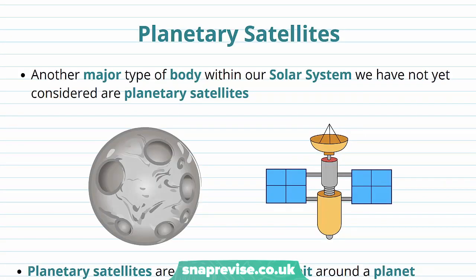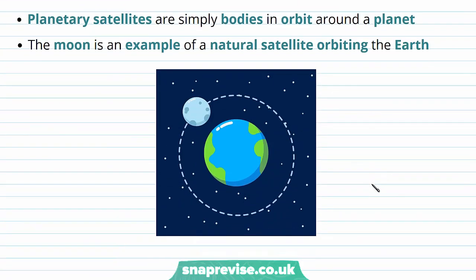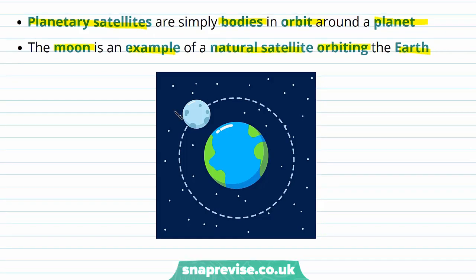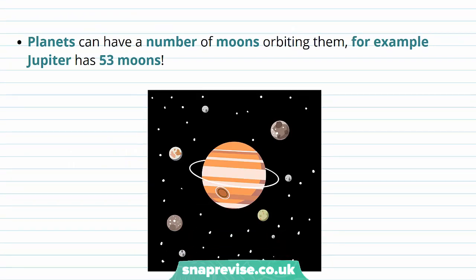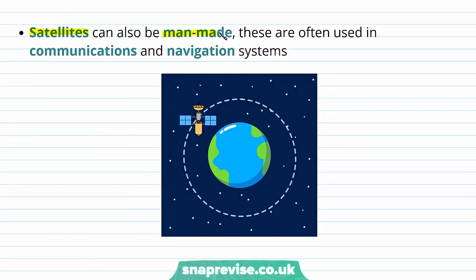The final objects we're going to consider are planetary satellites — bodies in orbit around a planet, such as a moon or a communications satellite. The Moon is an example of a natural satellite orbiting the Earth. Although the Earth has one moon, planets can have many — Jupiter has 53, ranging from very tiny to really large. Planetary satellites can also be man-made, and these are often used in communications and navigation systems.